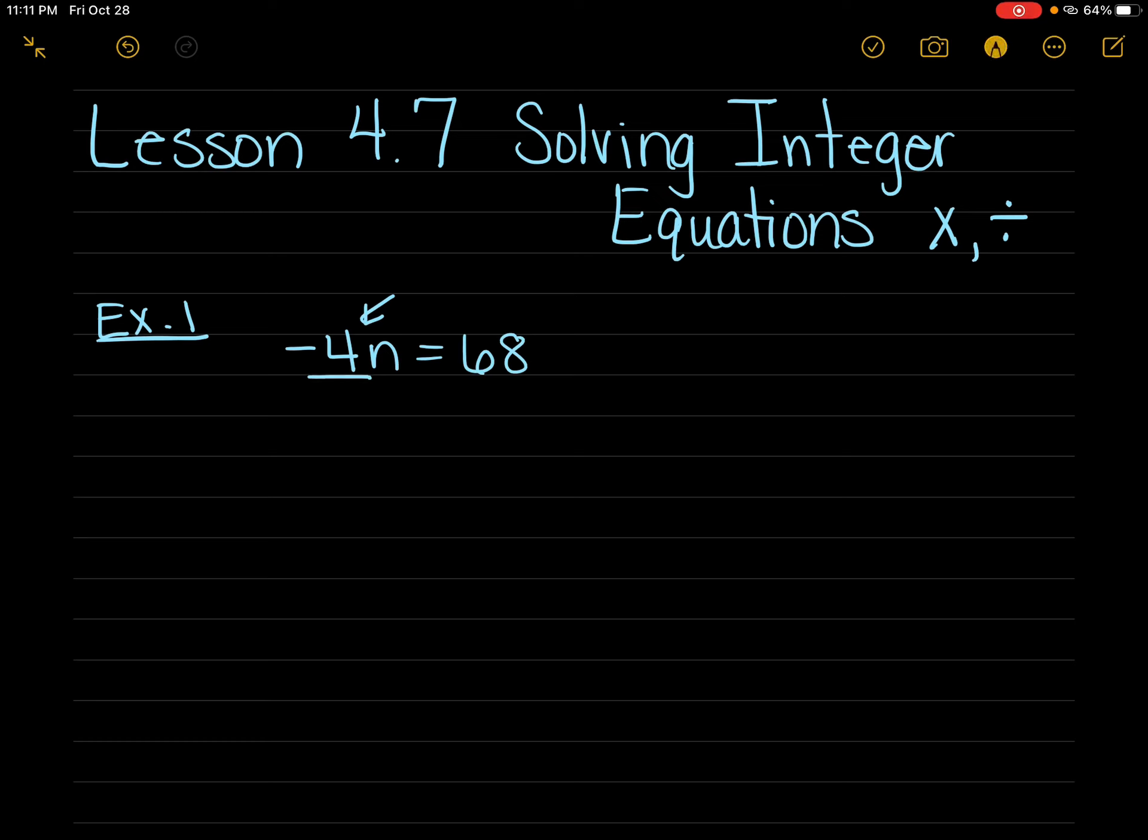This part of this equation, -4 over -4, becomes 1, right? But when we write 1n, we just have to write n, because that means there's 1n.